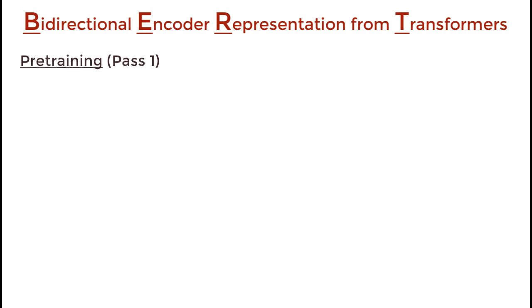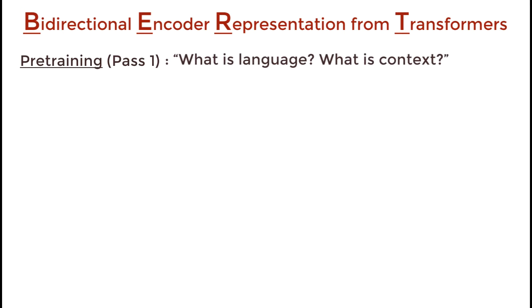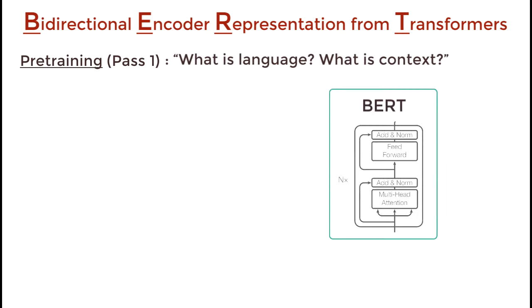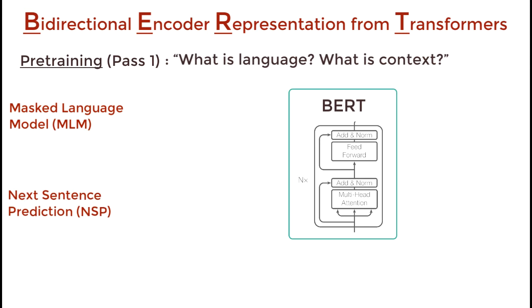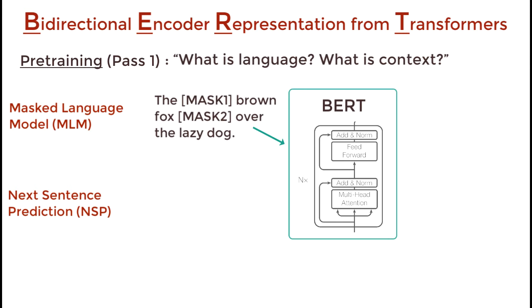Pre-training. The goal of pre-training is to make BERT learn what is language and what is context. BERT learns language by training on two unsupervised tasks simultaneously: masked language modeling and next sentence prediction. For masked language modeling, BERT takes in a sentence with random words filled with masks. The goal is to output these mask tokens — kind of like fill in the blanks. This helps BERT understand bidirectional context within a sentence.